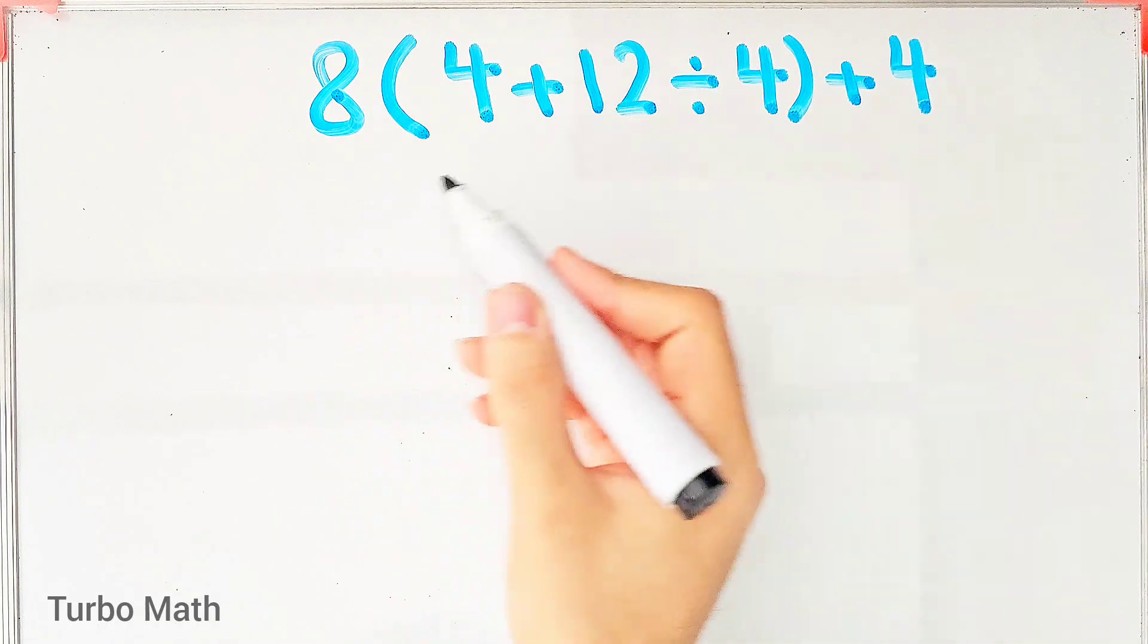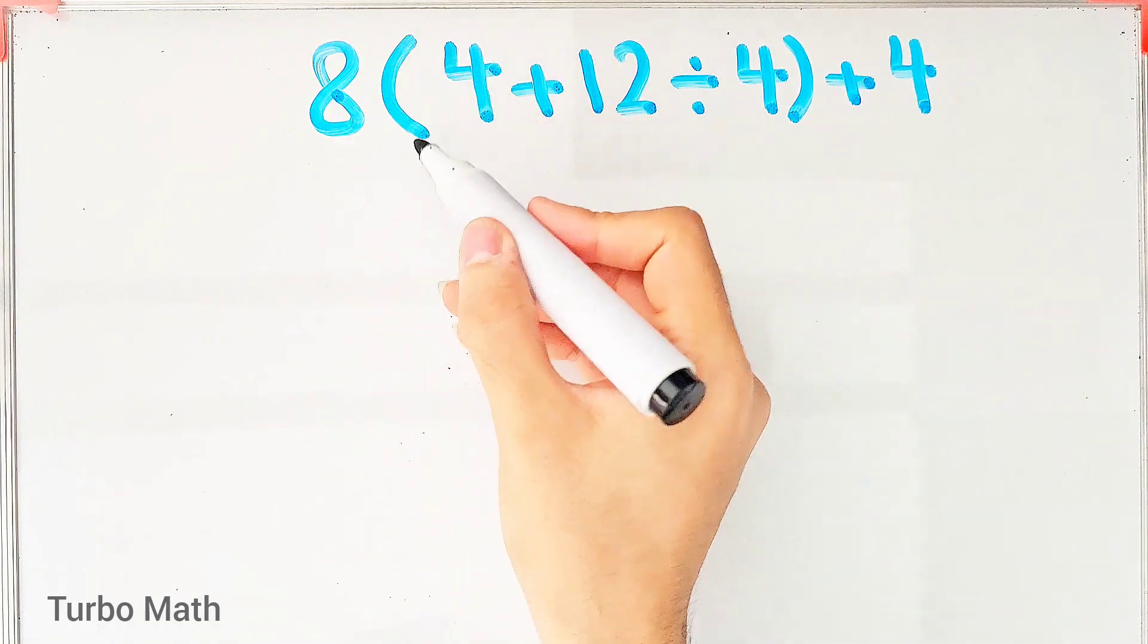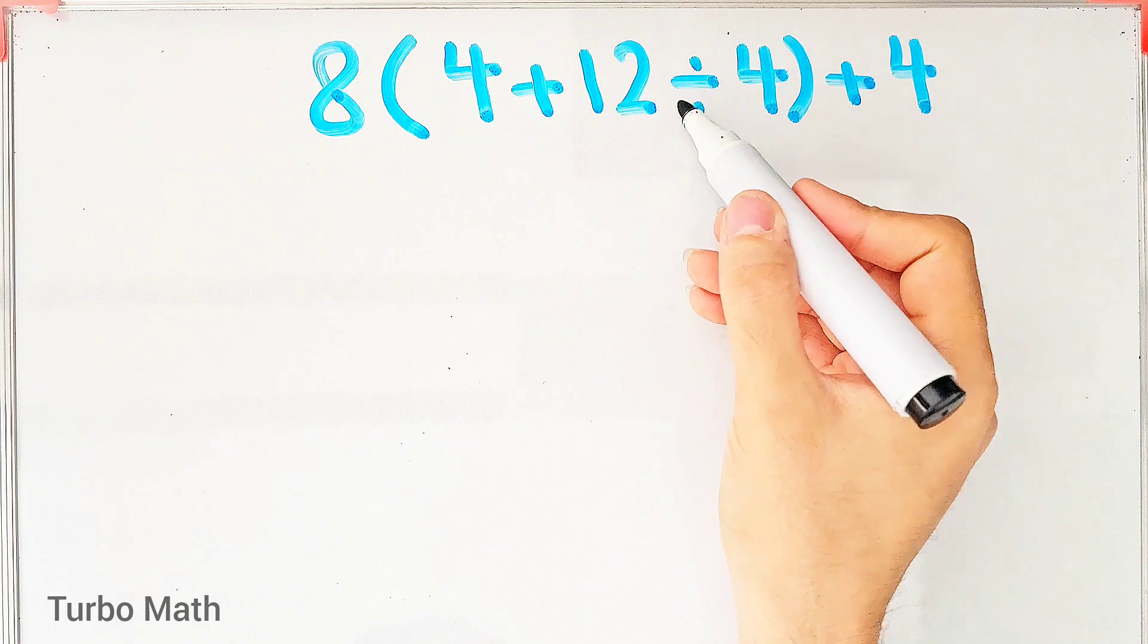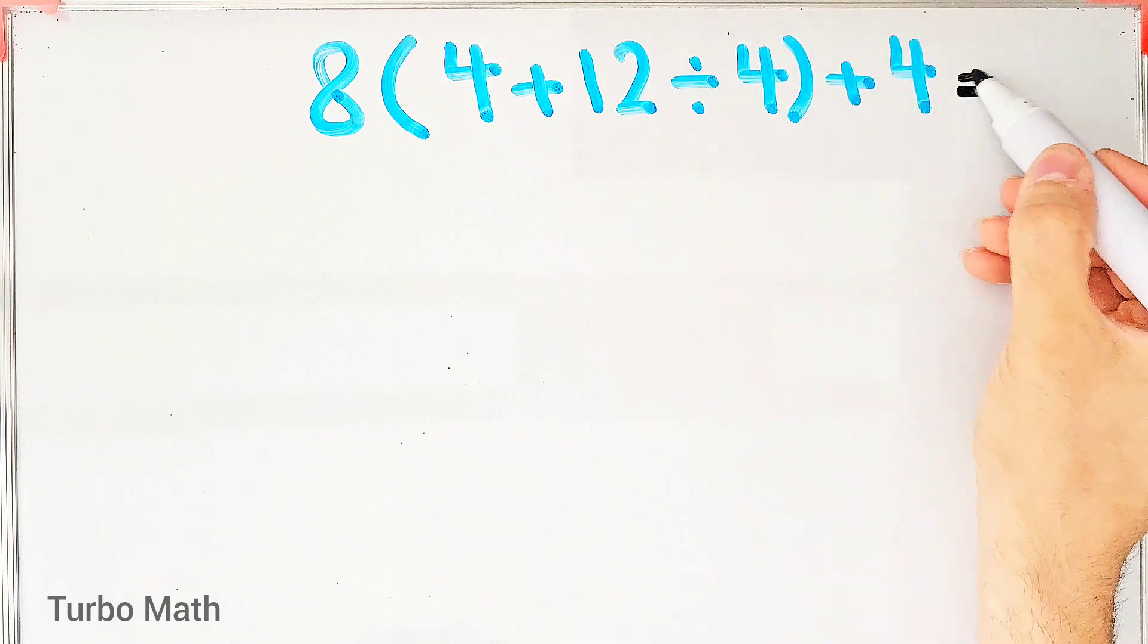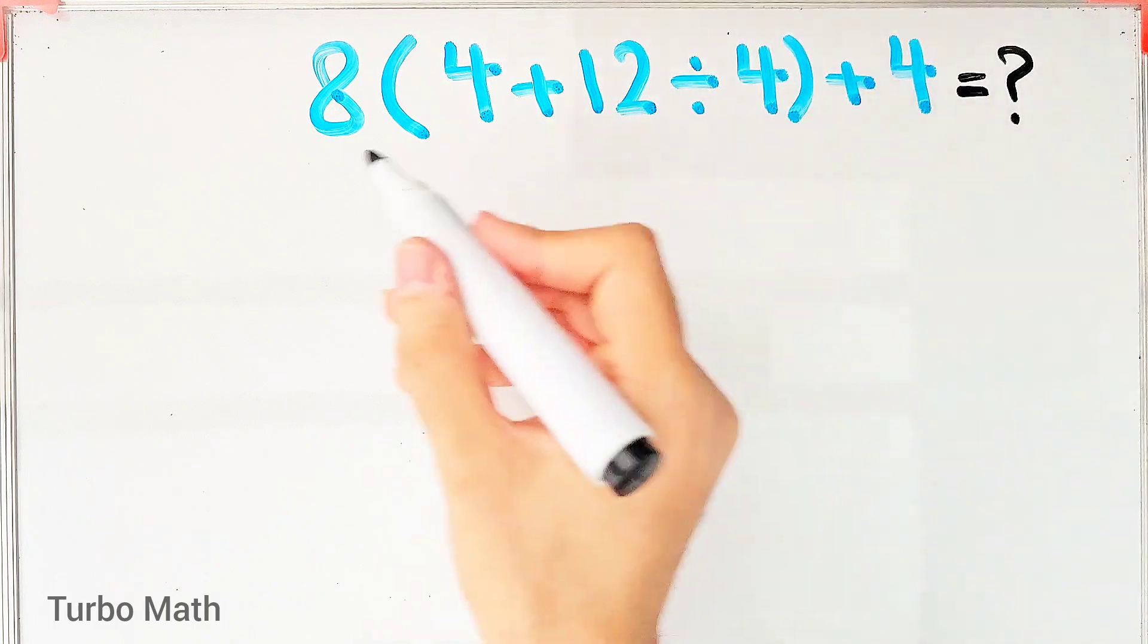Hi friends, welcome to Turbo Math channel. Eight times open parenthesis four plus twelve divided by four closed parenthesis plus four. What is the answer to this question? Can you solve it?